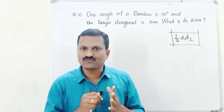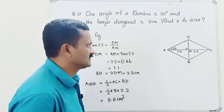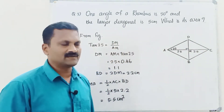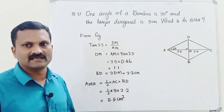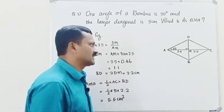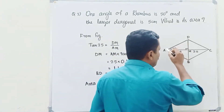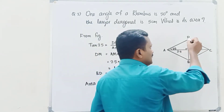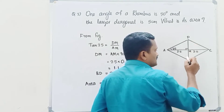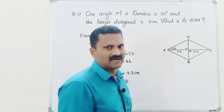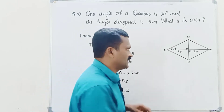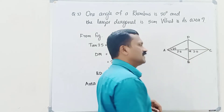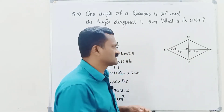Let's draw the figure and find the answer. Given: a rhombus with one diagonal of 5 centimetres and one angle of 50 degrees — the longest diagonal is 5 centimetres. In a rhombus, diagonals are perpendicular bisectors — they meet at their midpoint and are mutually perpendicular, making a 90-degree angle. Also, the diagonal bisects the angle at each vertex.